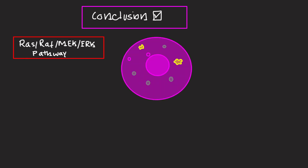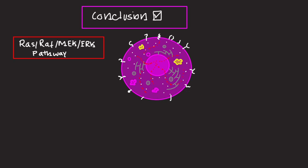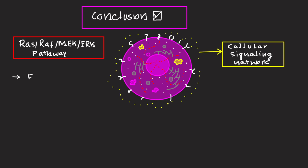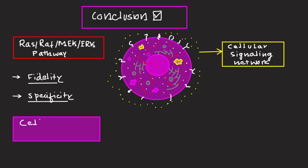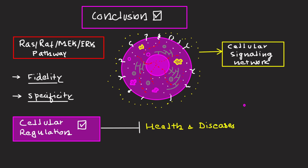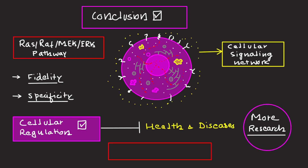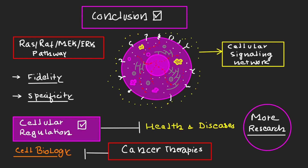The RAS-RAF-MEK-ERK pathway exemplifies the elegance of cellular signaling networks, ensuring signal fidelity and specificity. Its central role in cellular regulation highlights its importance in health and disease. Continuous research into this pathway is essential for advancing targeted cancer therapies and understanding fundamental cell biology. A lot of work is required to identify various molecules involved in this pathway so we can develop new therapeutics against diseases like cancer.